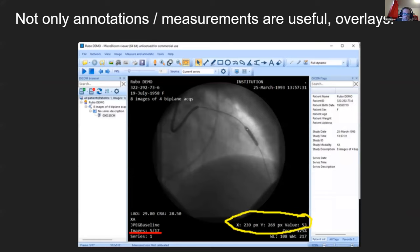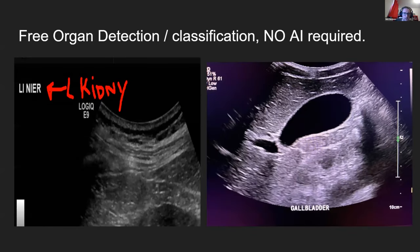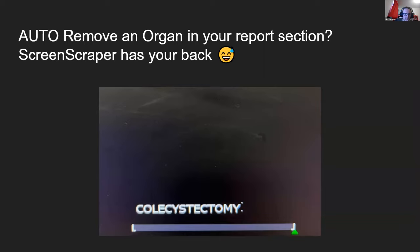Not only annotations or measurements are useful — sometimes overlays contain useful information as well. For example, the image series and the exact pixel coordinates of the mouse inside the DICOM file. Sometimes the number of rows and the zoom scale can allow for coordinate extrapolation, so you can find the exact X and Y coordinates inside the DICOM file without ever looking at the DICOM file. It can also give the ability to detect organs without using any artificial intelligence, because organs are sometimes labeled in the viewer — so you can auto-annotate organs in your reports using ScreenScraper's functionality.